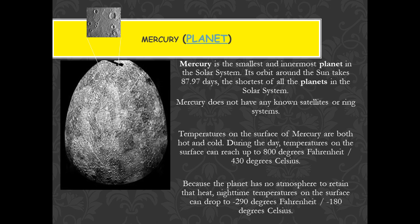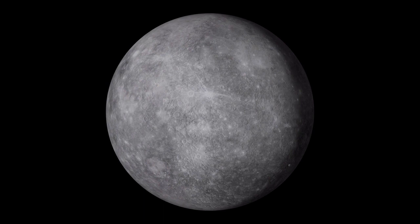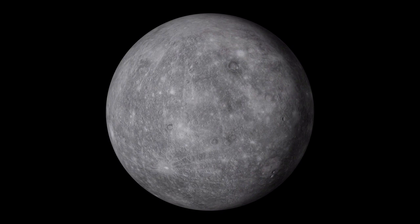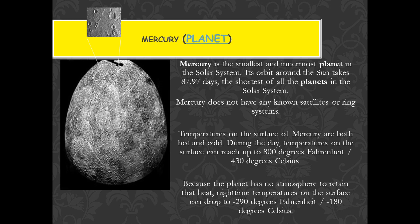Mercury is the smallest planet and the closest planet to the sun. It is called Buddha in Hindi. The surface is dry and very hot. There is no atmosphere here. Mercury is very hot during the day because it is closest to the sun, but at night there are very adverse conditions and the temperature is very low. So we cannot call it the hottest planet.